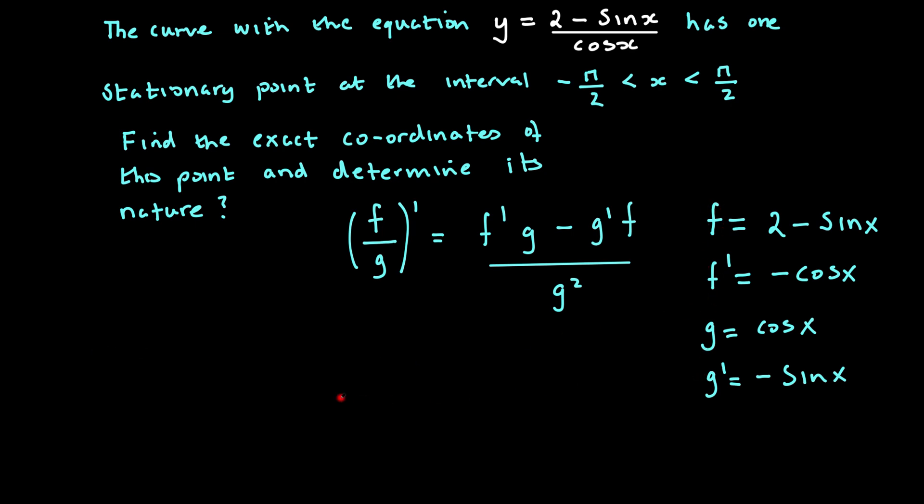Now substituting all these into the quotient rule, we get (f/g)' equals f' g. So f' we've got is -cos x, we'll use the dot for multiplication, and g that we have is simply just cos x.